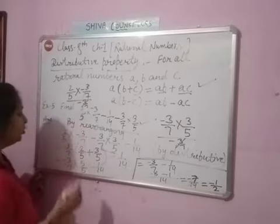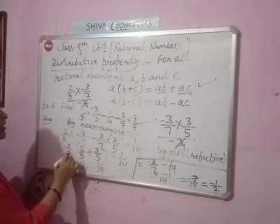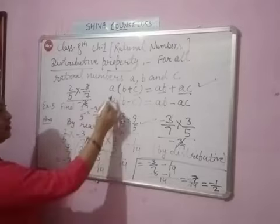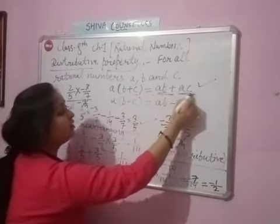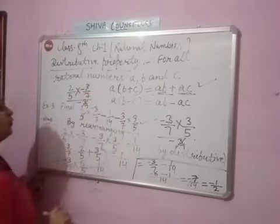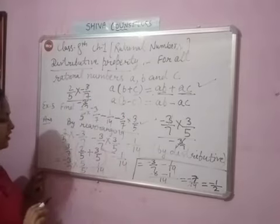And minus 1/14 is left. See which form: a common comes b plus c. We have made this form by taking a common.